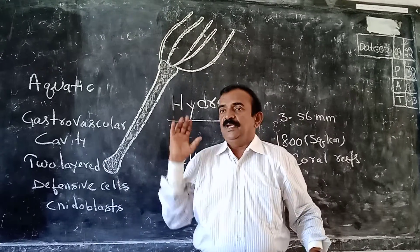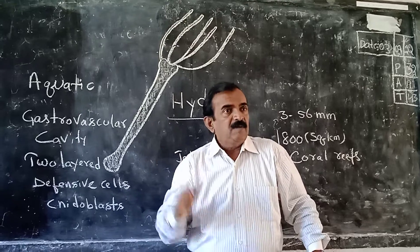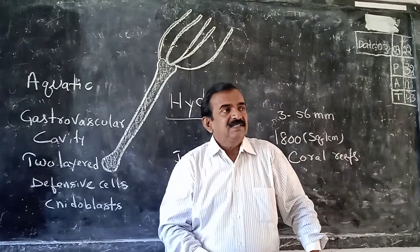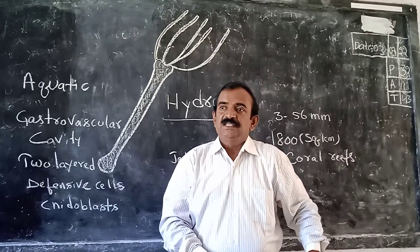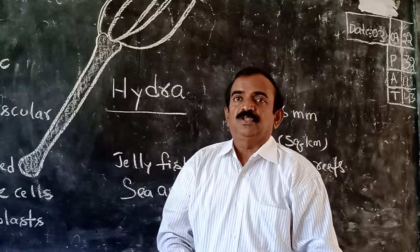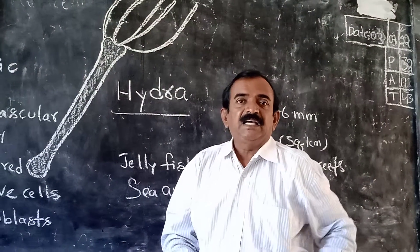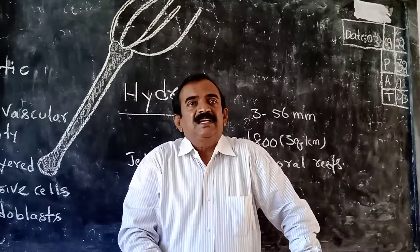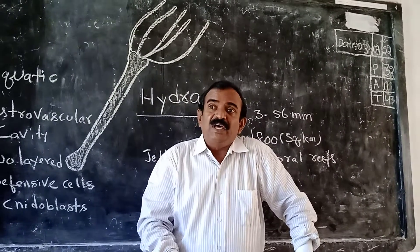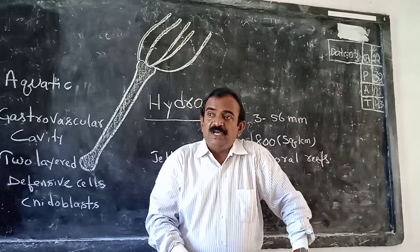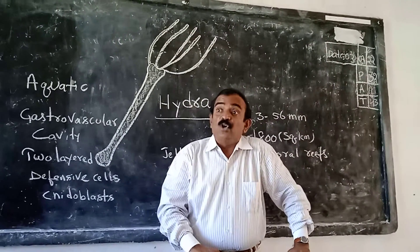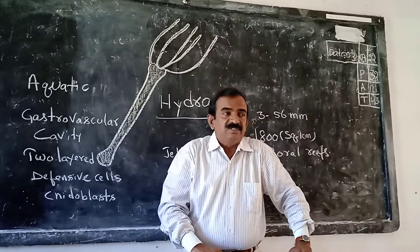Today, here on the blackboard, you are observing the second volume. That is Coelenterata or Cnidaria. First is Protozoa or Porifera. Next Coelenterata. Next Platyhelminthes. Next Annelida. Nematoda. Annelida. Arthropoda. Mollusca. Echinodermata. Next, Protochordata. Chordata. Vertebrata. Like that you see.